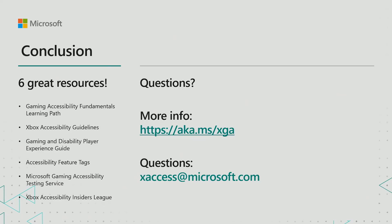In summary, today we've covered six of the gaming accessibility resources Microsoft has created to help game developers and publishers make their products more delightful for gamers with disabilities. The Gaming Accessibility Fundamentals Learning Path is a fantastic place for those who are new to game accessibility to learn and demonstrate foundational concepts related to gaming and disability. The Xbox Accessibility Guidelines can then be used to explore various accessibility features and design choices that can be included in a game to make the product enjoyable for gamers with disabilities. And the Gaming and Disability Player Experience Guide can be used in conjunction with the Xbox Accessibility Guidelines to gain a more holistic view of how various types of disabilities can benefit from specific types of facilitators. When trying to determine where to begin, the accessibility feature tags give game developers a great place to start, with the added benefit of making accessible games more easily discoverable by the gaming and disability community.